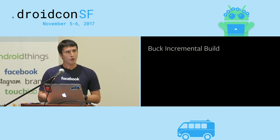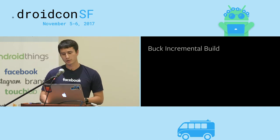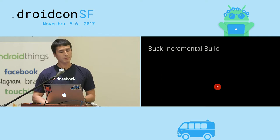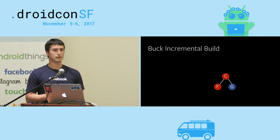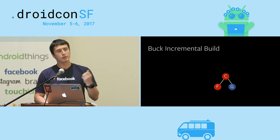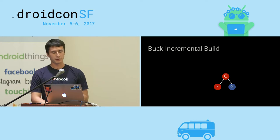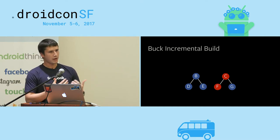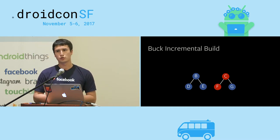In an incremental build, Buck calculates the minimal set of changes that need to be recompiled based on the changes you're making to the code. Say we change node F — we change one of its files and we change a public API. That means F obviously needs to be rebuilt. Since its public API has changed, C, which has a dependency on F, also needs to be rebuilt. But G has no dependency there, so we leave it alone and reuse the artifact from our previous build. The other half of our build graph also has no dependencies on our changed code, so we can leave it alone too.